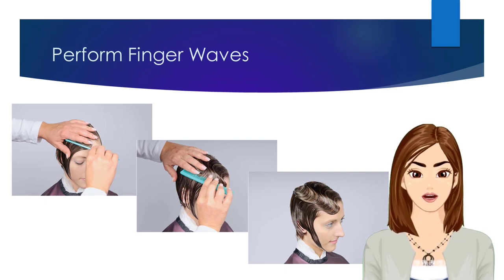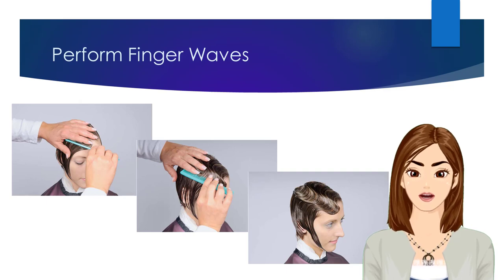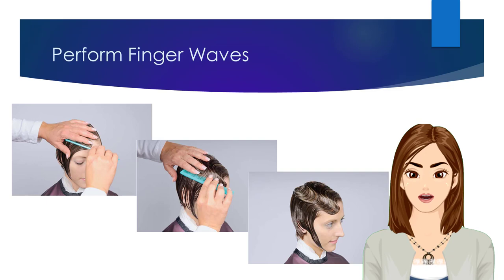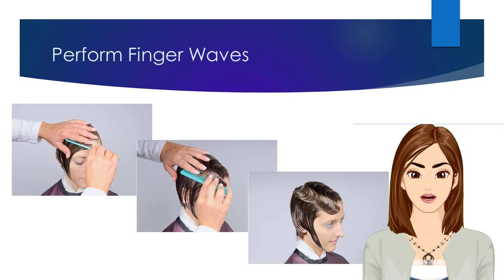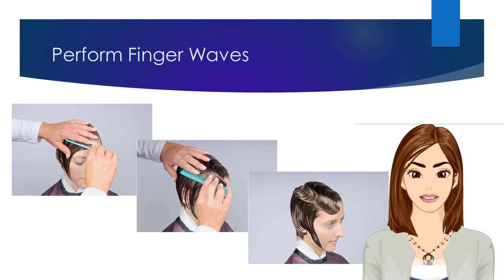Repeat this process directly behind the first C shape to create an elongated C-C shape. Repeat this process working in 1 to 2 inch sections at a time, from the front hairline to the crown, creating a row of C shapes. To create the second row, we will begin on the closed side of the C shape, at the crown area.